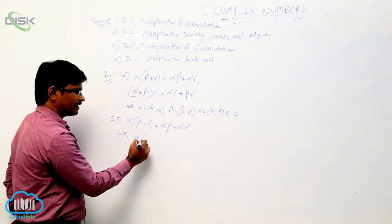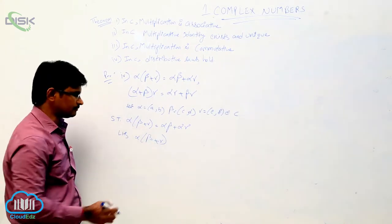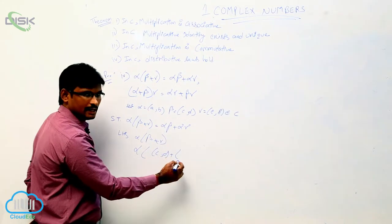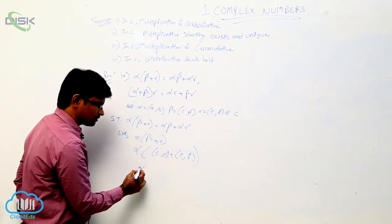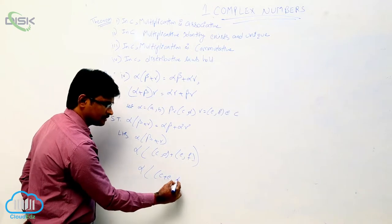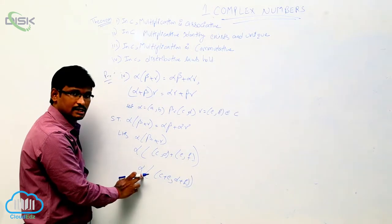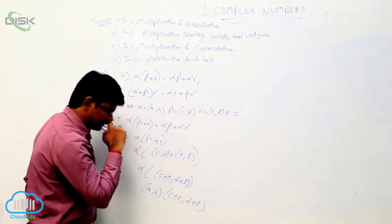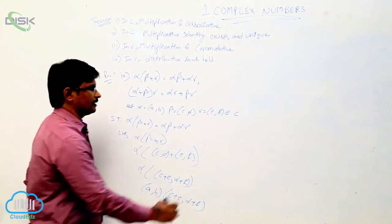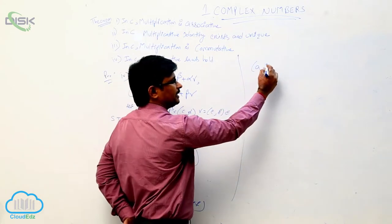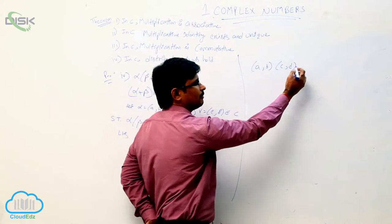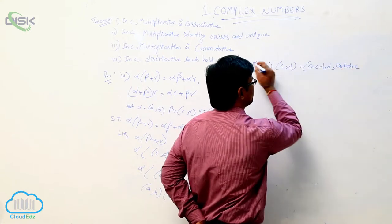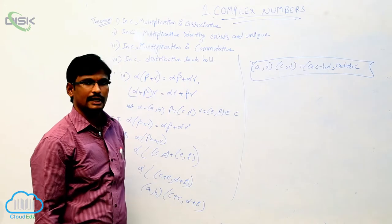Consider LHS: alpha·(beta + gamma). Alpha into — what is beta? (c, d) plus gamma which is (e, f). So alpha into the addition of these two: (c + e, d + f). Now what is alpha? (a, b) into (c + e, d + f). Apply the product property: for (a, b)·(c, d) we get (ac − bd, ad + bc). So applying: a·(c + e) − b·(d + f) comma a·(d + f) + b·(c + e).